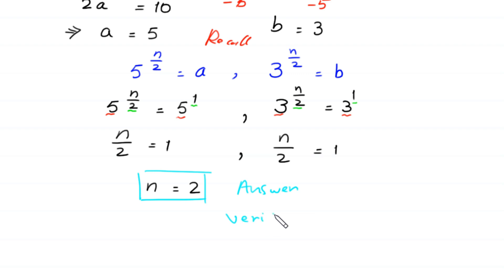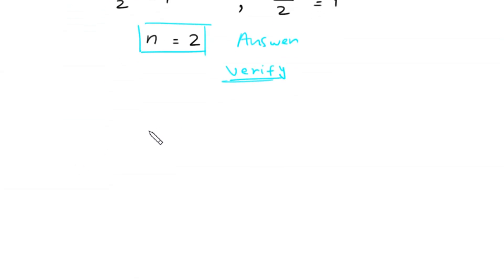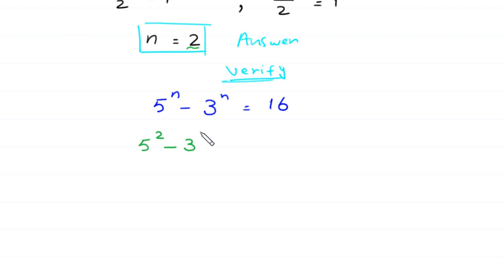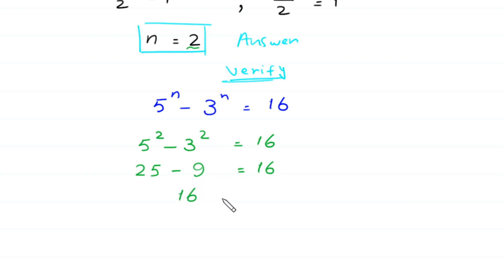Let's verify by substituting n equals 2 into the original equation: 5 to the power 2 minus 3 to the power 2 equals 16. We get 25 minus 9 equals 16, and 25 minus 9 is indeed 16. Left-hand side equals right-hand side, so it is proved that n equals 2 is a valid solution.